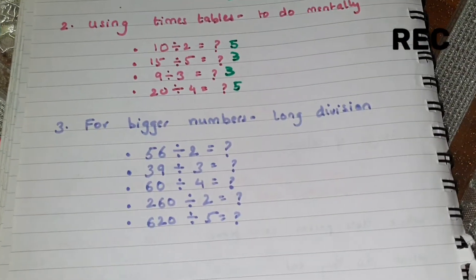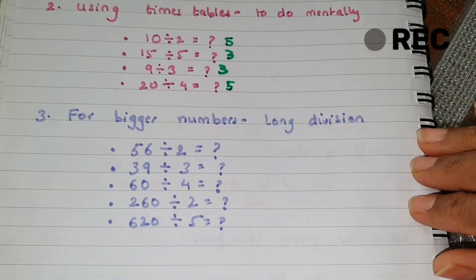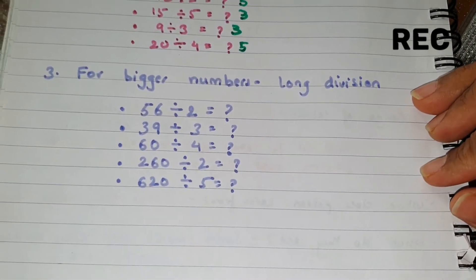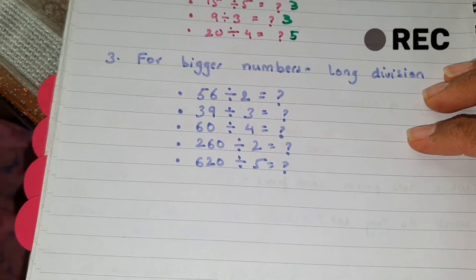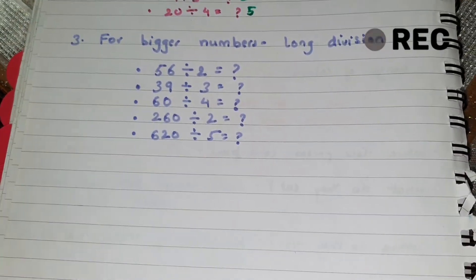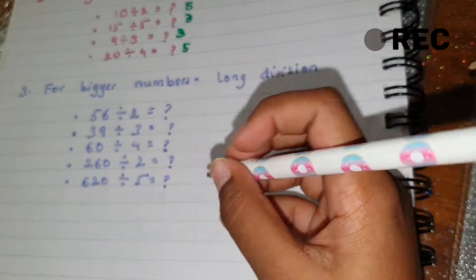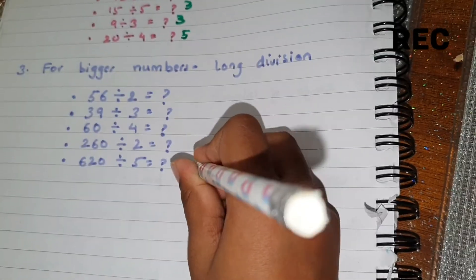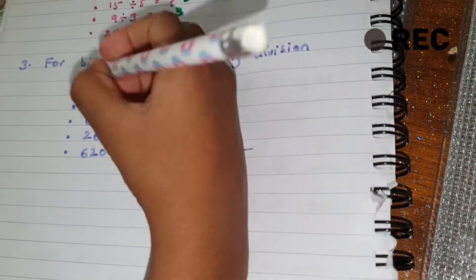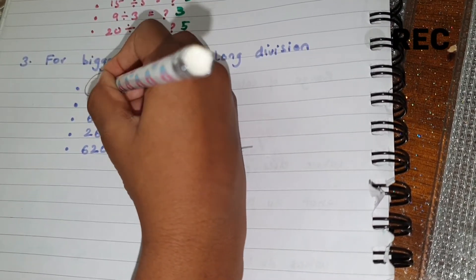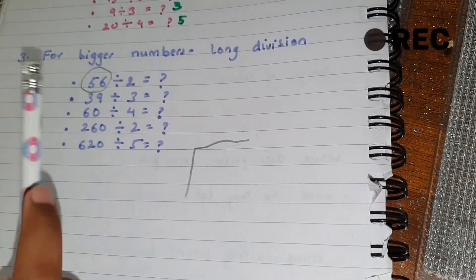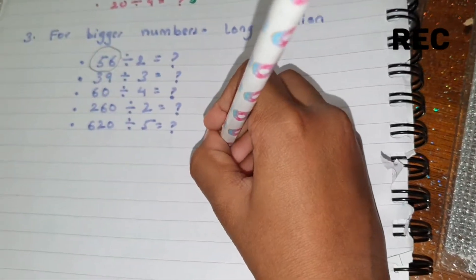Okay, so now for bigger numbers we will use long division. What do you mean by that, and why are we not using times tables? We're going to set it out like this — we're not going to join it. This is going to be our bigger number. Let's have a look — so we circle 56, so that would go in here: 56, and 2 here.